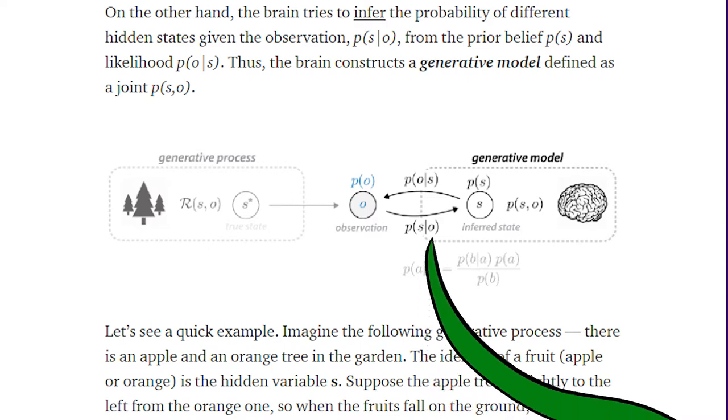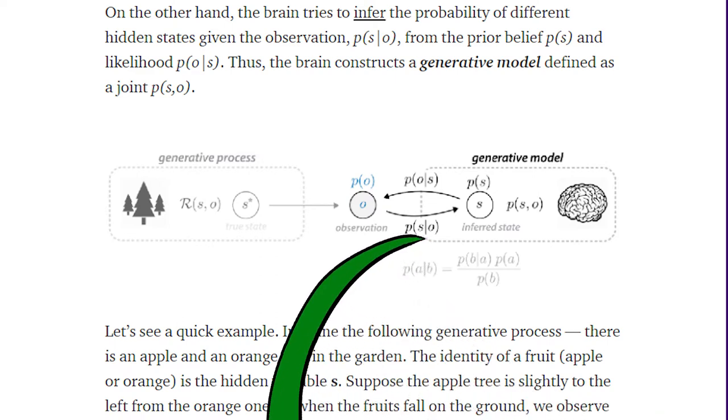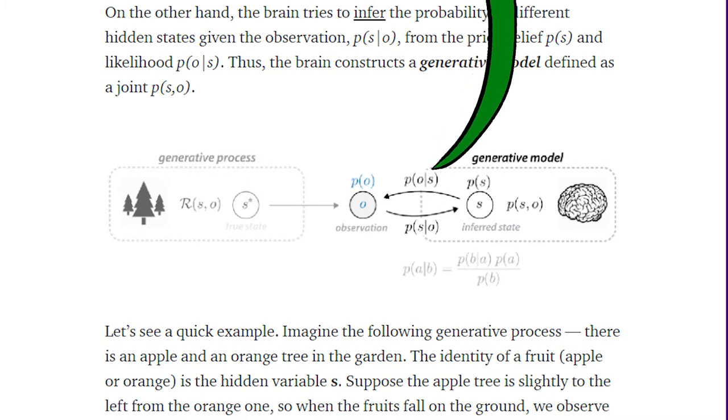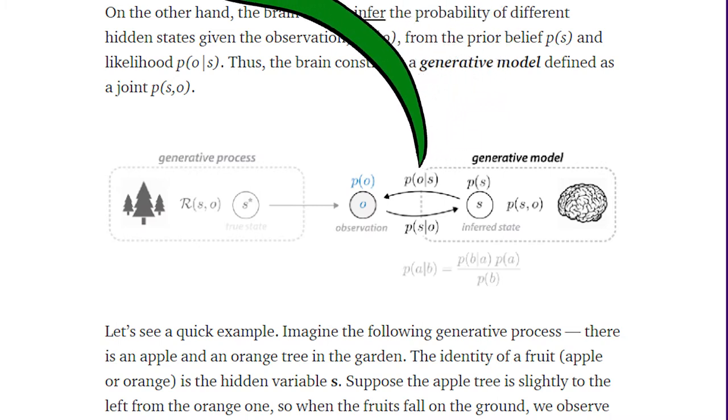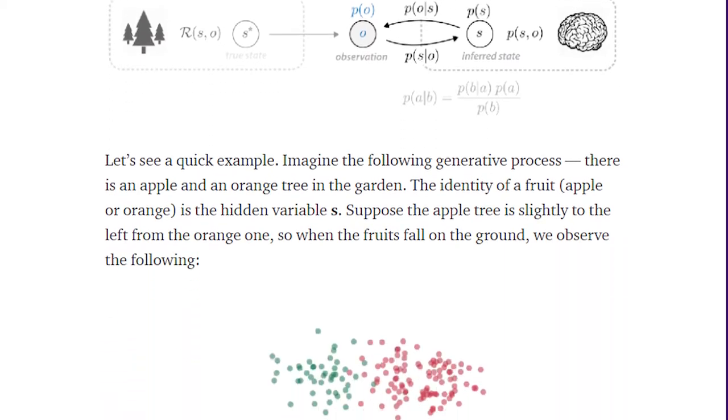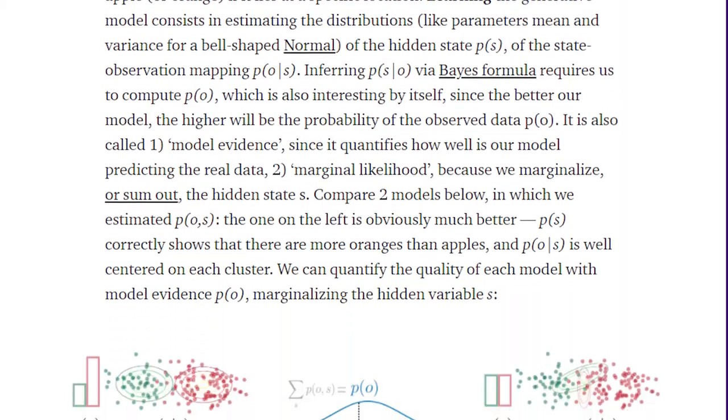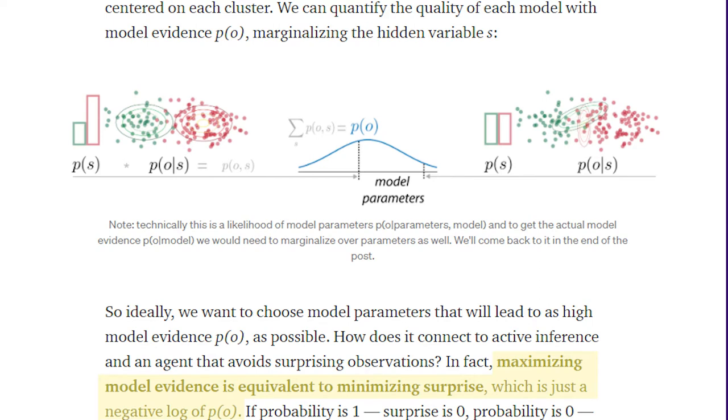Given some observation, what's the probability reality is one state or another? If reality was one state or the other, what's the probability to get this observation? This is called active inference. Our conceptualization of reality should maximize the likelihood of the observations we're getting. Maximizing the probability of our observations is the same as minimizing the negative log of the probability of our observations, also called our surprise.